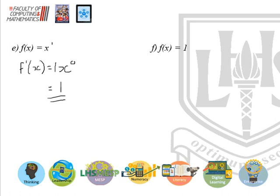For f(x) = 1, there's no x with a power, but we can think of it as x^0. When that 0 comes down during differentiation, it multiplies everything and makes it 0. So when f(x) equals 1 — or really any constant number — that number just disappears and the derivative is 0. These are two very common cases you'll quickly get used to.